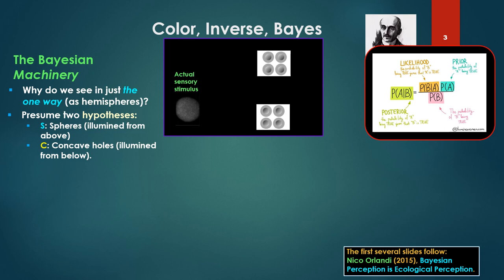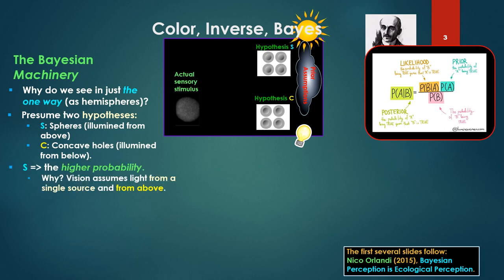So presume two hypotheses. Hypothesis S is that we've got spheres or hemispheres, and hypothesis C, we've got domes. One says we're illumined from above, S. C says it's illumined from below. And we're dragging these out of a cloud of prior assumptions. So S is given the higher probability, domes. Why? Because vision assumes light from a single source and from above, namely the sun.